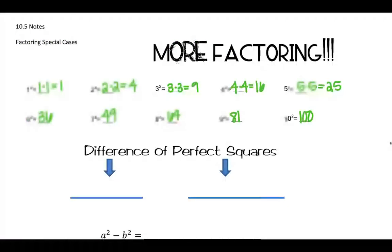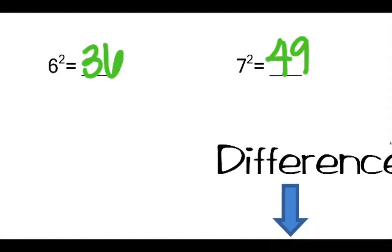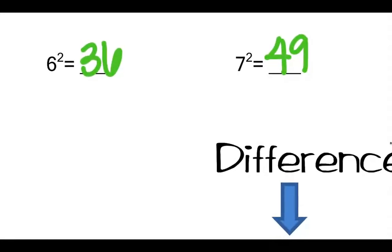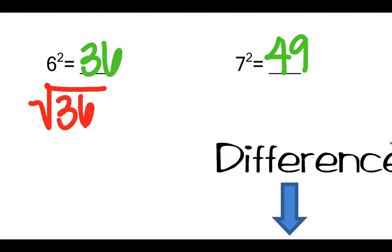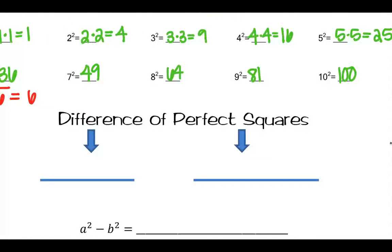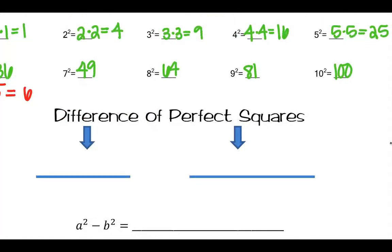So that's squaring. If I were to do the inverse — remember the opposite, like inverse of adding is subtracting — if I did the inverse of squaring, 6 squared, the opposite would be square root of 36, which is equal to 6. So it's the opposite of what we just did. You're saying what times itself gives me 36.